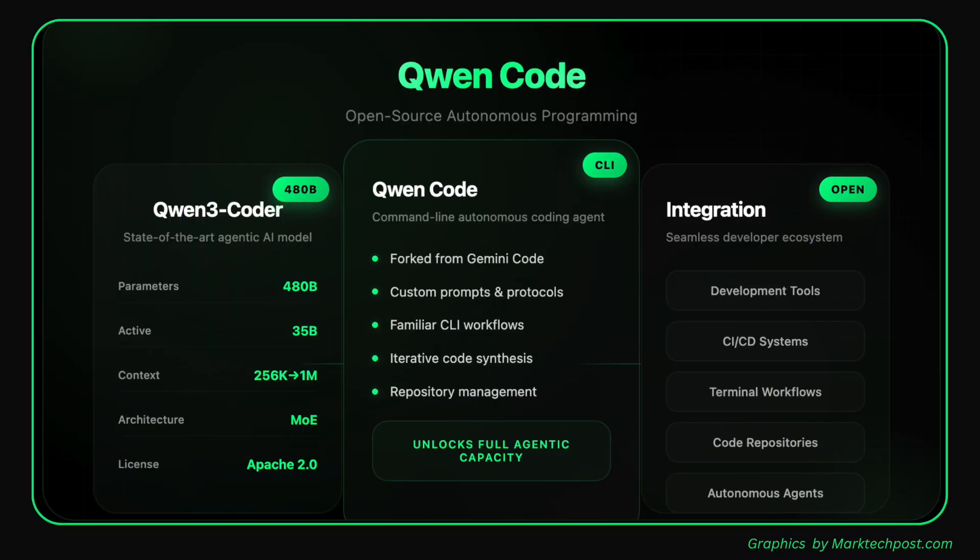Alongside the model release, Qwen introduces QwenCode, an open-source command-line tool forked from GeminiCode, purpose-built to unlock Qwen3 Coder's full agentic capacity. QwenCode integrates advanced custom prompts and function call protocols, enabling developers to harness the model's autonomous coding capabilities through familiar CLI workflows.